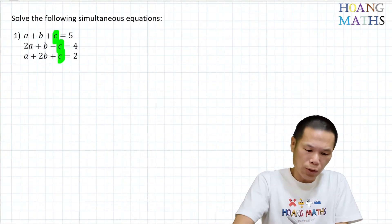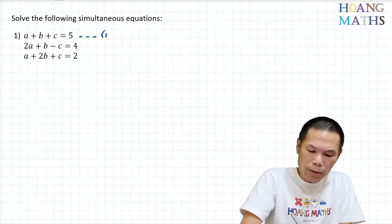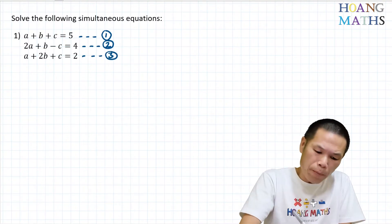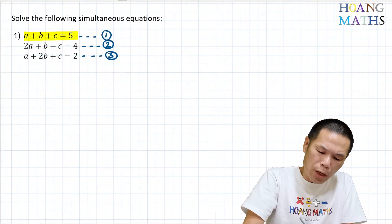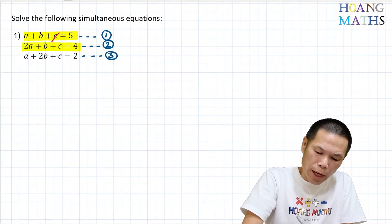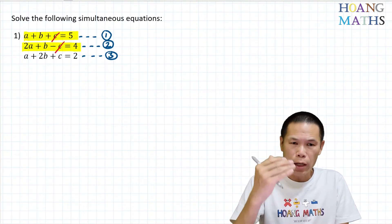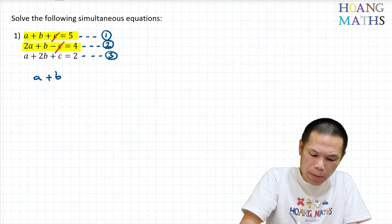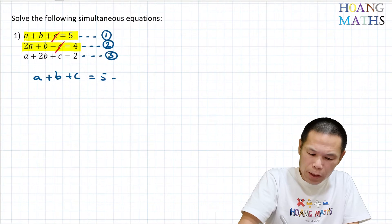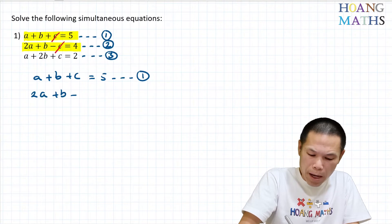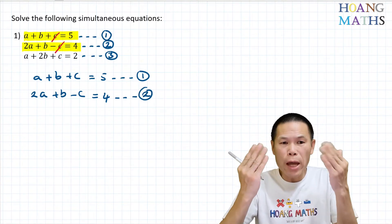Let me name the equations first. This is equation number one, this is equation number two, and this is equation number three. You can see that if I add equation number one with equation number two, the c will cancel out because one has positive c and the other has negative c. So equation one is a plus b plus c equals five, and equation two is 2a plus b minus c equals four.